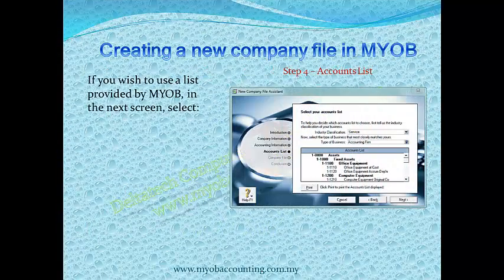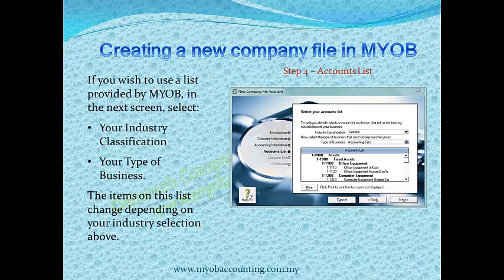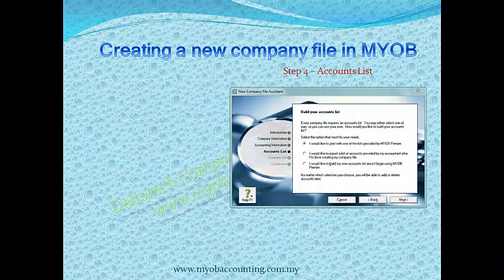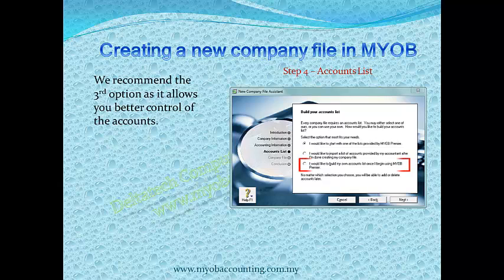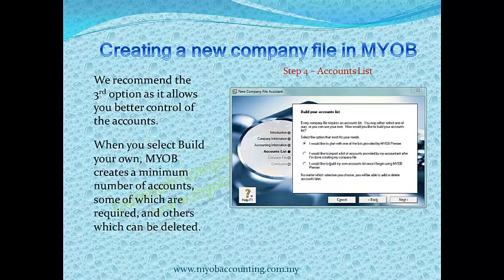If you wish to use the list provided by MYOB, in the next screen select your industry classification and your type of business. The items on this list change depending on your industry selection. Click Next when ready. We recommend the third option as it allows you better control of the accounts. When you select Build Your Own, MYOB creates a minimum number of accounts, some of which are required and others which can be deleted. Click Next when ready.